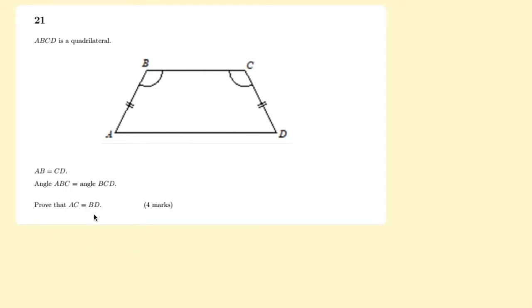The question is prove that AC equals BD. So here we have AC, and then BD is across this way.